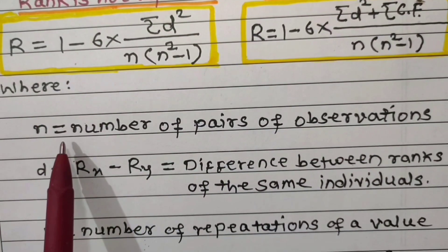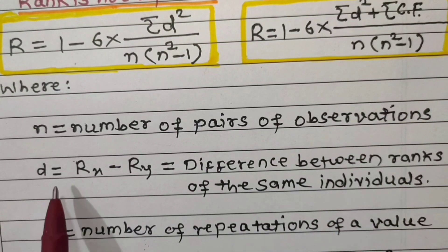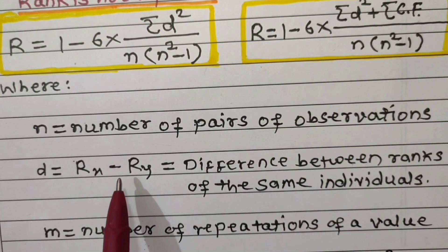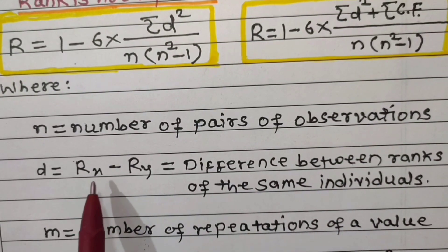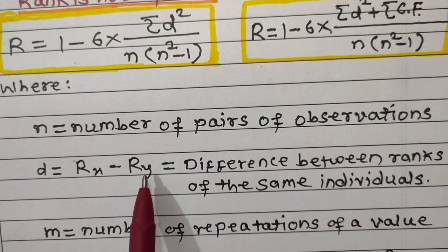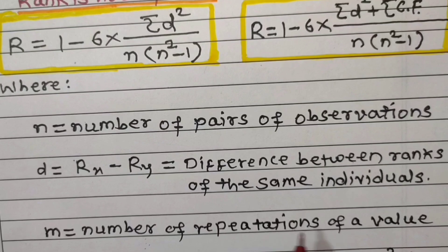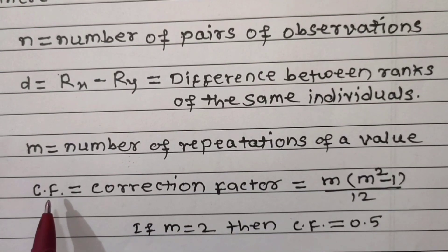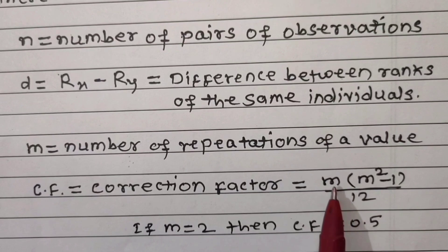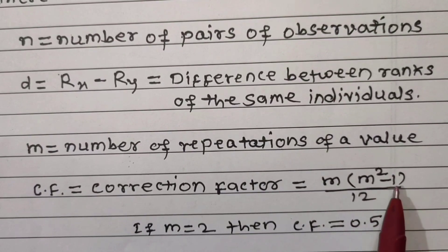Where n is the number of pairs of observations, d is the difference between the ranks — that is, ranks of variable x minus corresponding ranks of variable y. m is the number of repetitions of a value, and the correction factor is given by m(m² − 1) divided by 12.